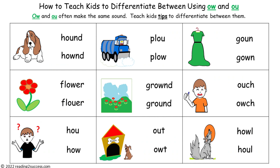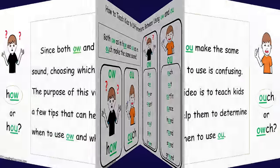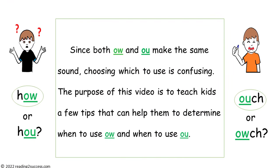Parents, welcome to how to teach kids to differentiate between using the letters O-W and O-U. They often make the same sound, so it is important to teach kids tips to differentiate between them. Both O-W as in 'how' and O-U as in 'ouch' make the same sound: ow. Since both make the same sound, choosing which to use is confusing. The purpose of this video is to teach kids a few tips that can help them determine when to use O-W and when to use O-U.